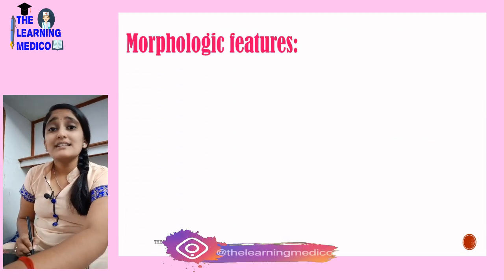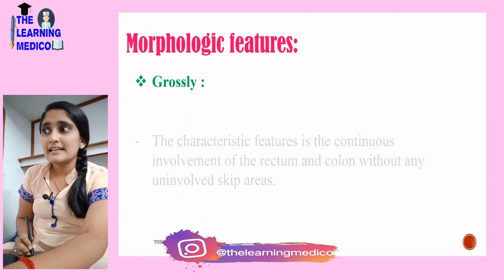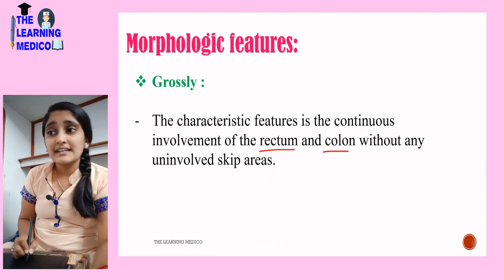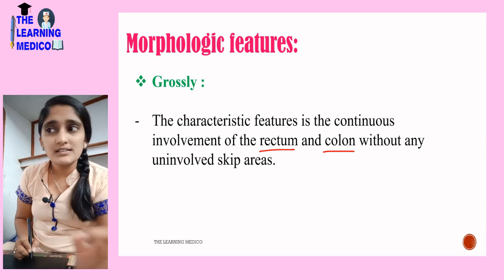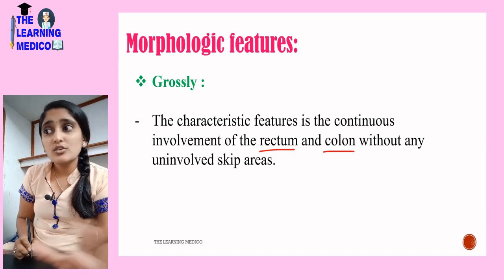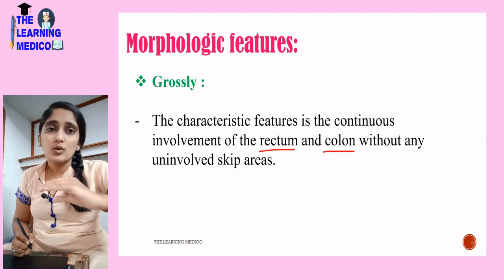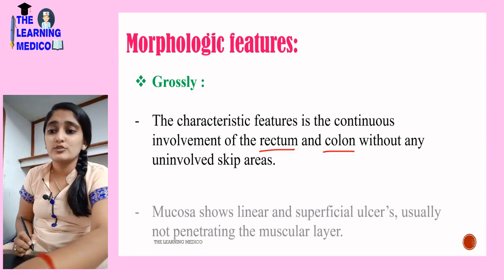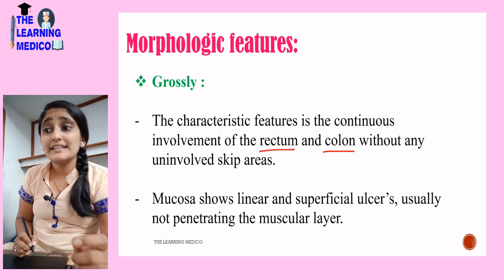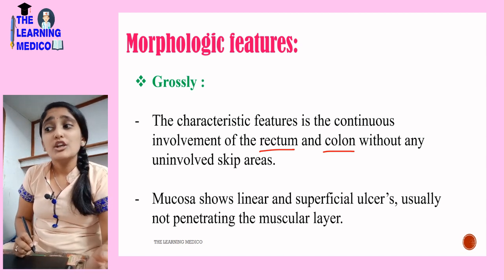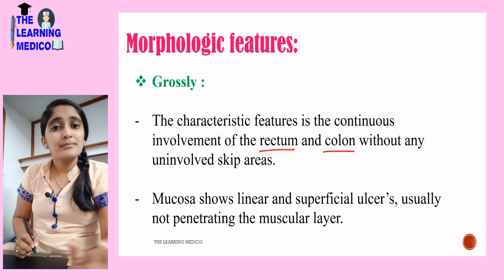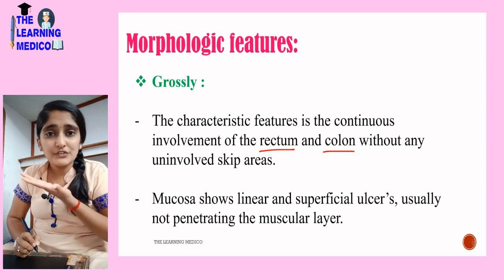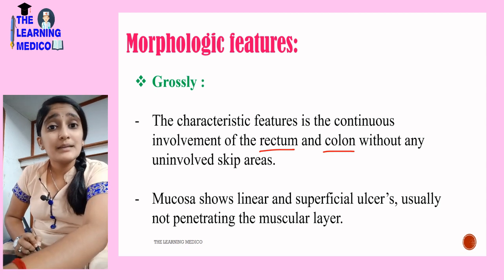Now, what are the morphologic features? Grossly, there is continuous involvement of the rectum and the colon without any skip areas — the rectum and colon will be completely involved. The mucosa shows linear and superficial ulcers, usually not penetrating into the muscular layer, so the ulcers will be superficial and not deep.